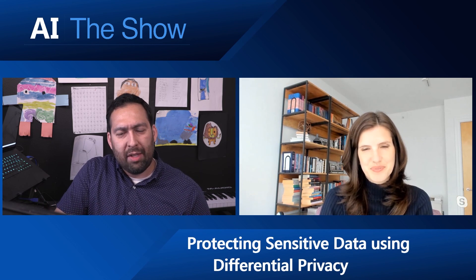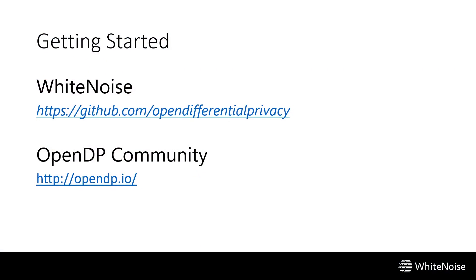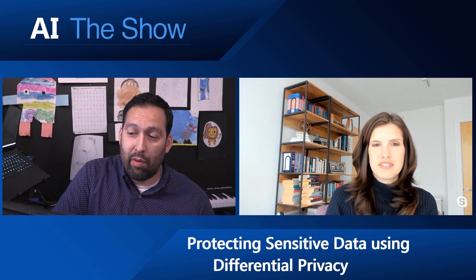Where can people go to find out more? We have a GitHub repository where you can check out all of the code, contribute, and see this notebook and others. White Noise is also part of a larger community called OpenDP, which we're starting to enable differential privacy tools and research in the open — you can check out the community and get involved. This has been another episode of the AI Show where we learned all about protecting sensitive data using differential privacy. We'll see you next time, take care.